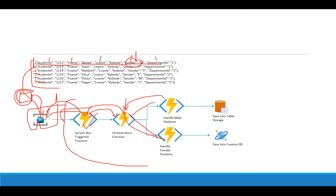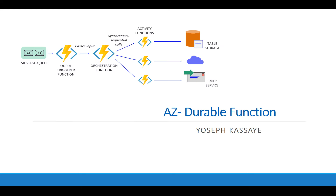Now, to sum up — durable function is an extension of Azure function: source component, trigger function, orchestrator, task handler. This is how it is working. I hope you enjoy the presentation. This is how Azure function is working. My name is Yosif Adunyakasai.